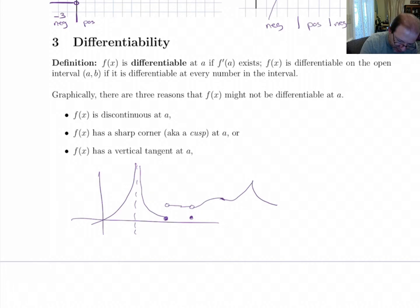And the other thing is if it has a vertical tangent. And vertical tangents, those can happen if you have a graph that looks like something like that. You can have a vertical tangent there in the middle.